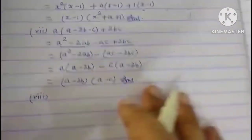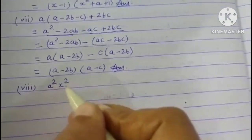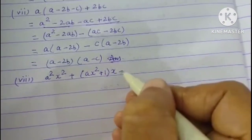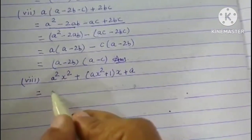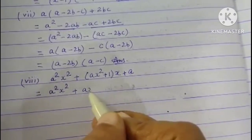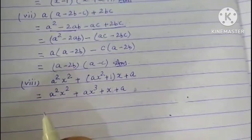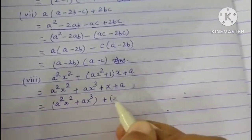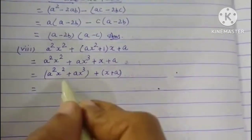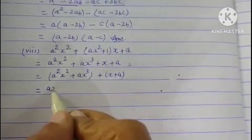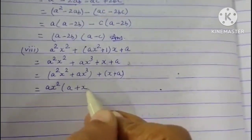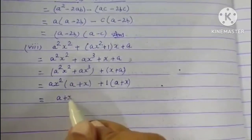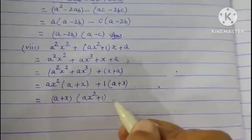Eighth question: (a²x² + ax² + 1)(x + a) — actually expanding: a²x² + ax³ + x + a. Grouping: (a²x² + ax³) + (x + a) = ax²(a + x) + 1(x + a). Taking (a + x) common: (a + x)(ax² + 1).